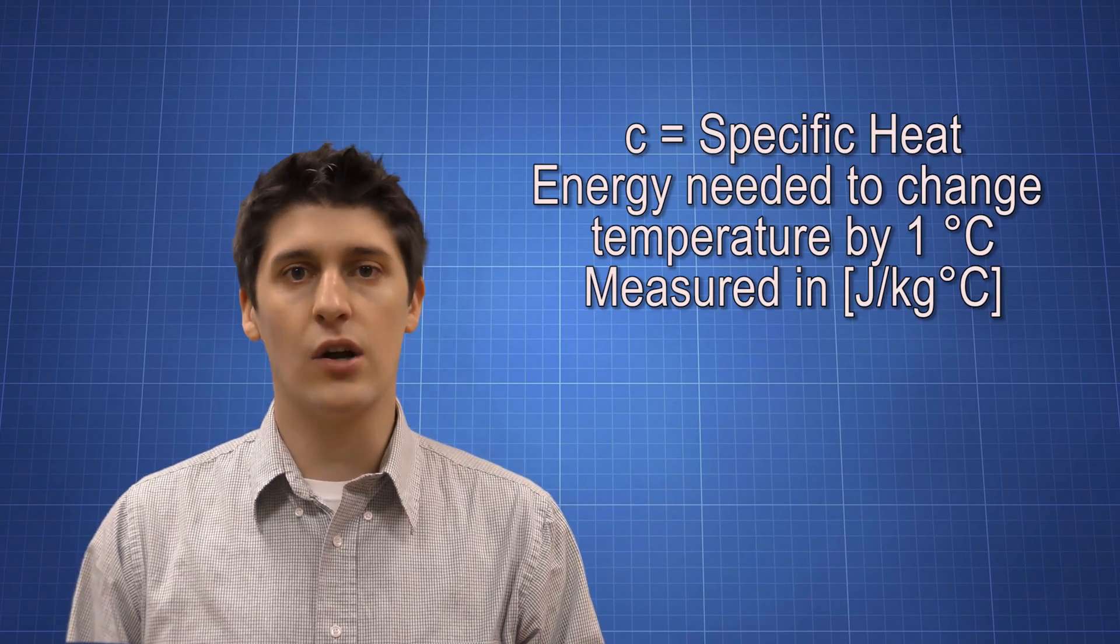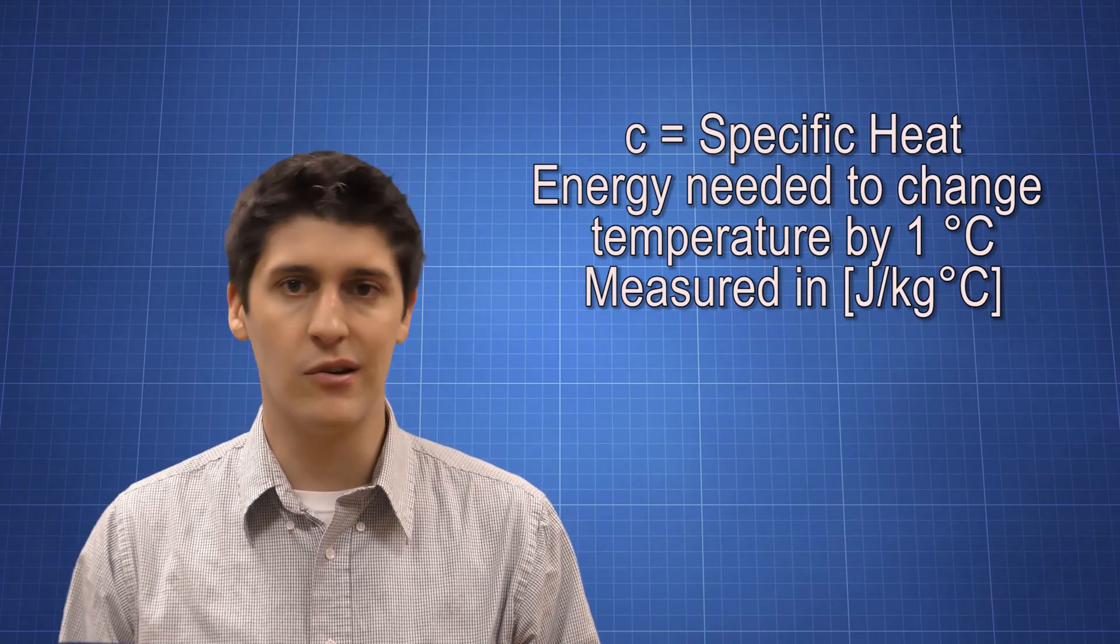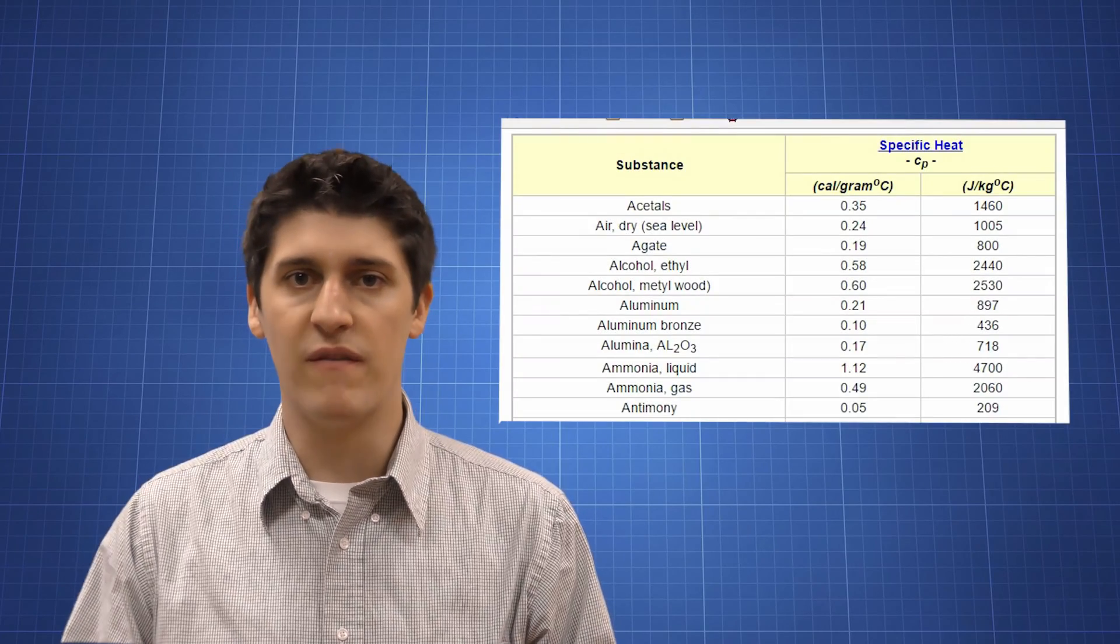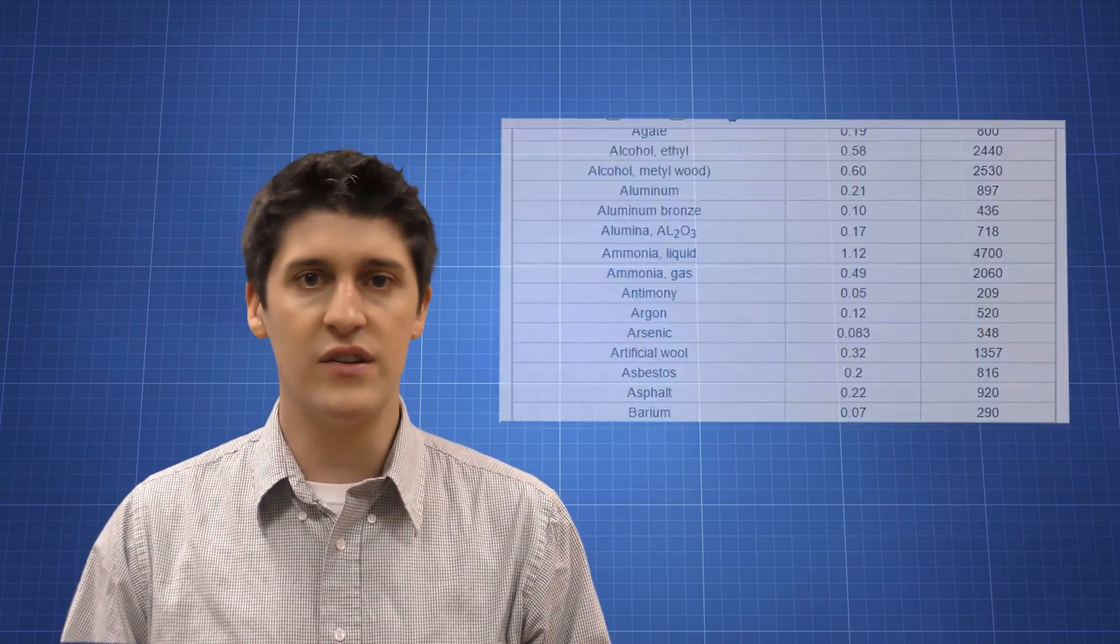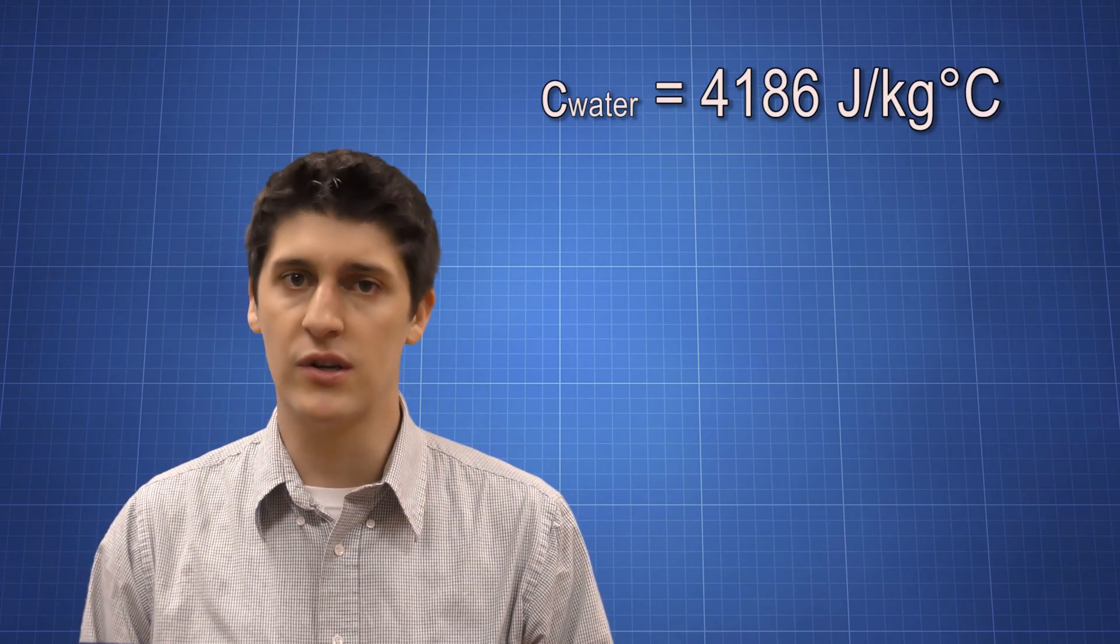C is called the specific heat of something, and it's got kind of a gross unit. It's a joule per kilogram degree Celsius, but it doesn't really matter. The specific heat can be pulled from a table of information. For instance, the specific heat for water is 4,186 joules per kilogram degree Celsius.